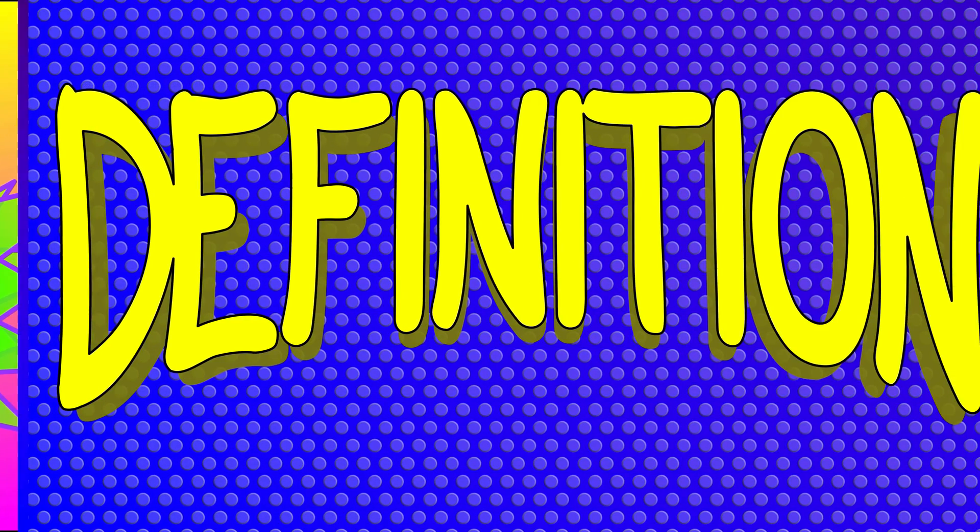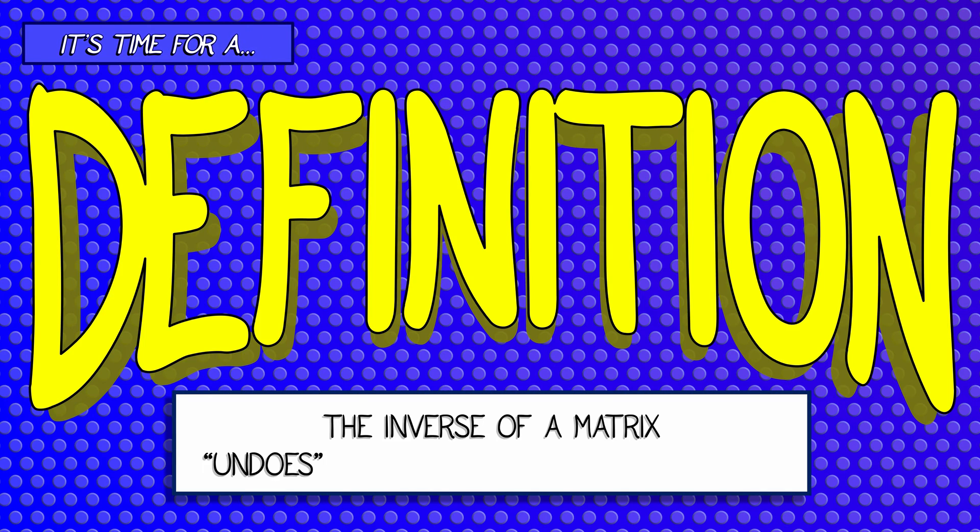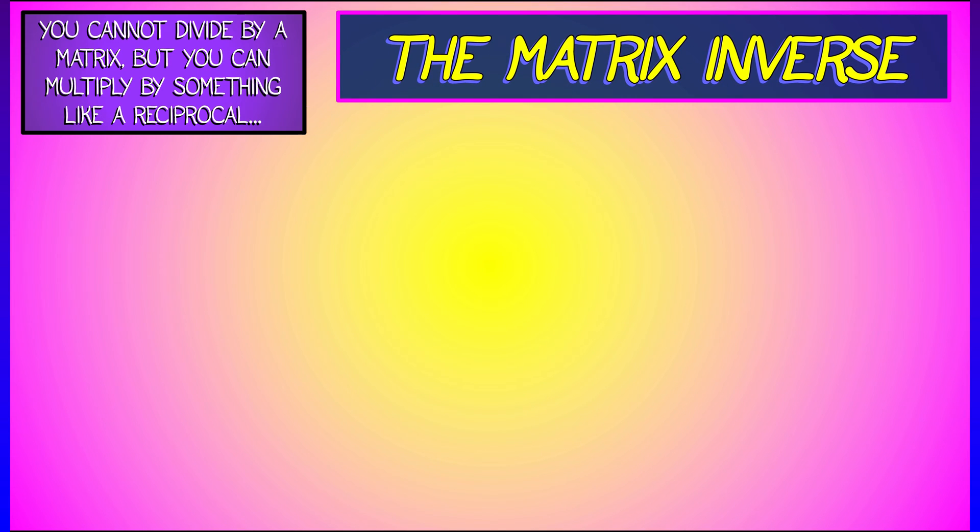Well, let's think about that for a minute. I think it's time for a definition, something that undoes how a matrix acts on a vector. This is called the inverse of a matrix, and even though you can't divide by a matrix, you can multiply by something like a reciprocal, something like that matrix to the negative one power.